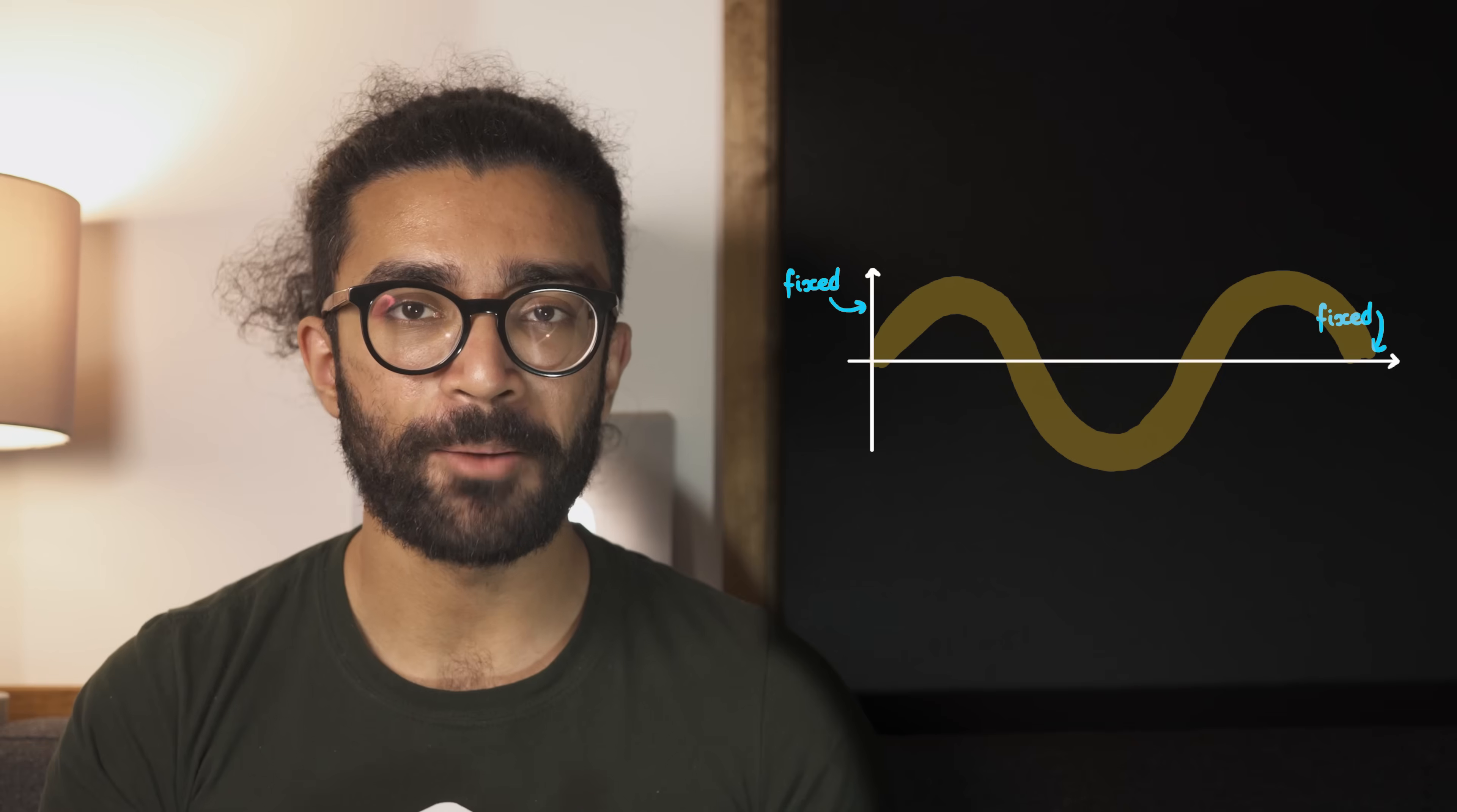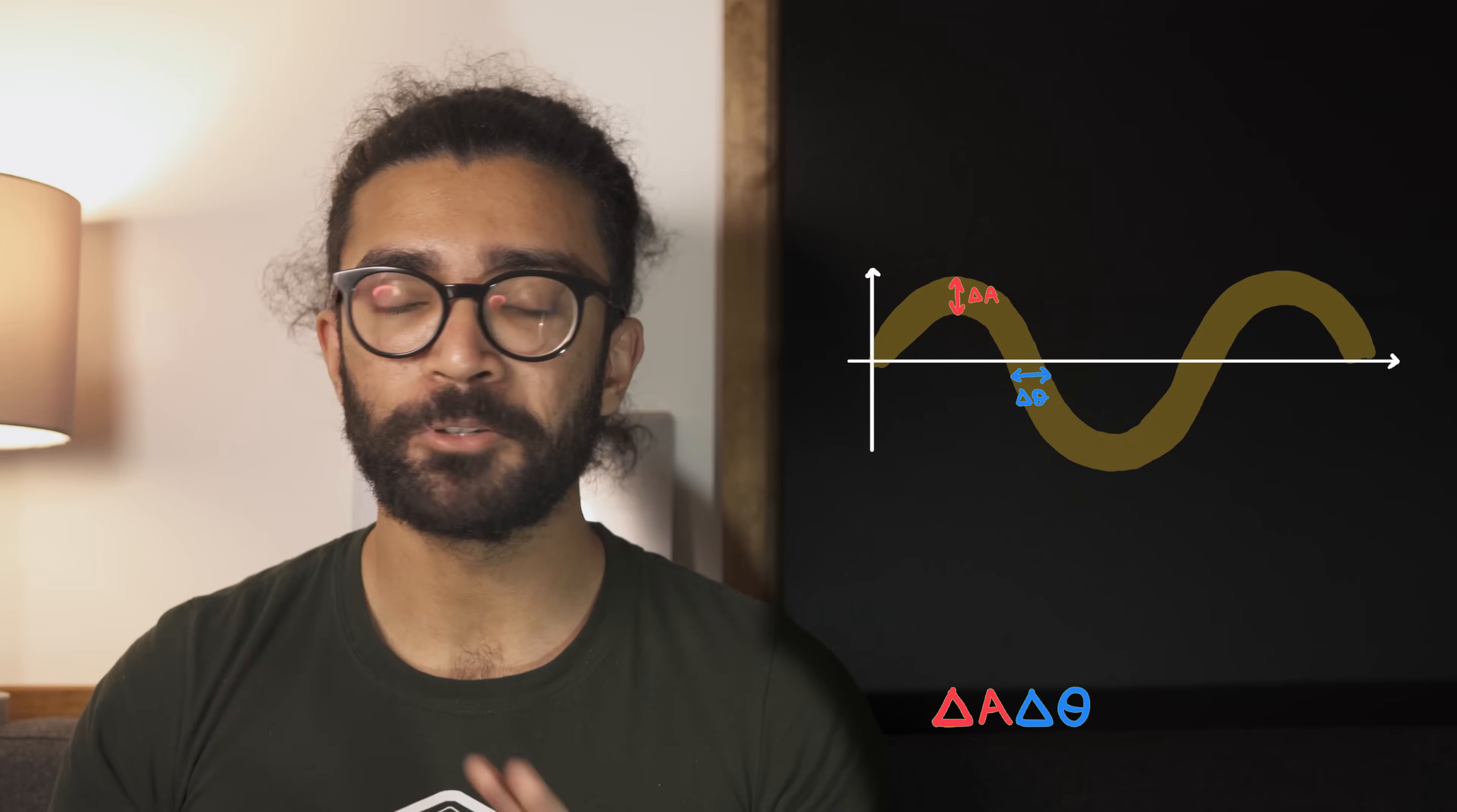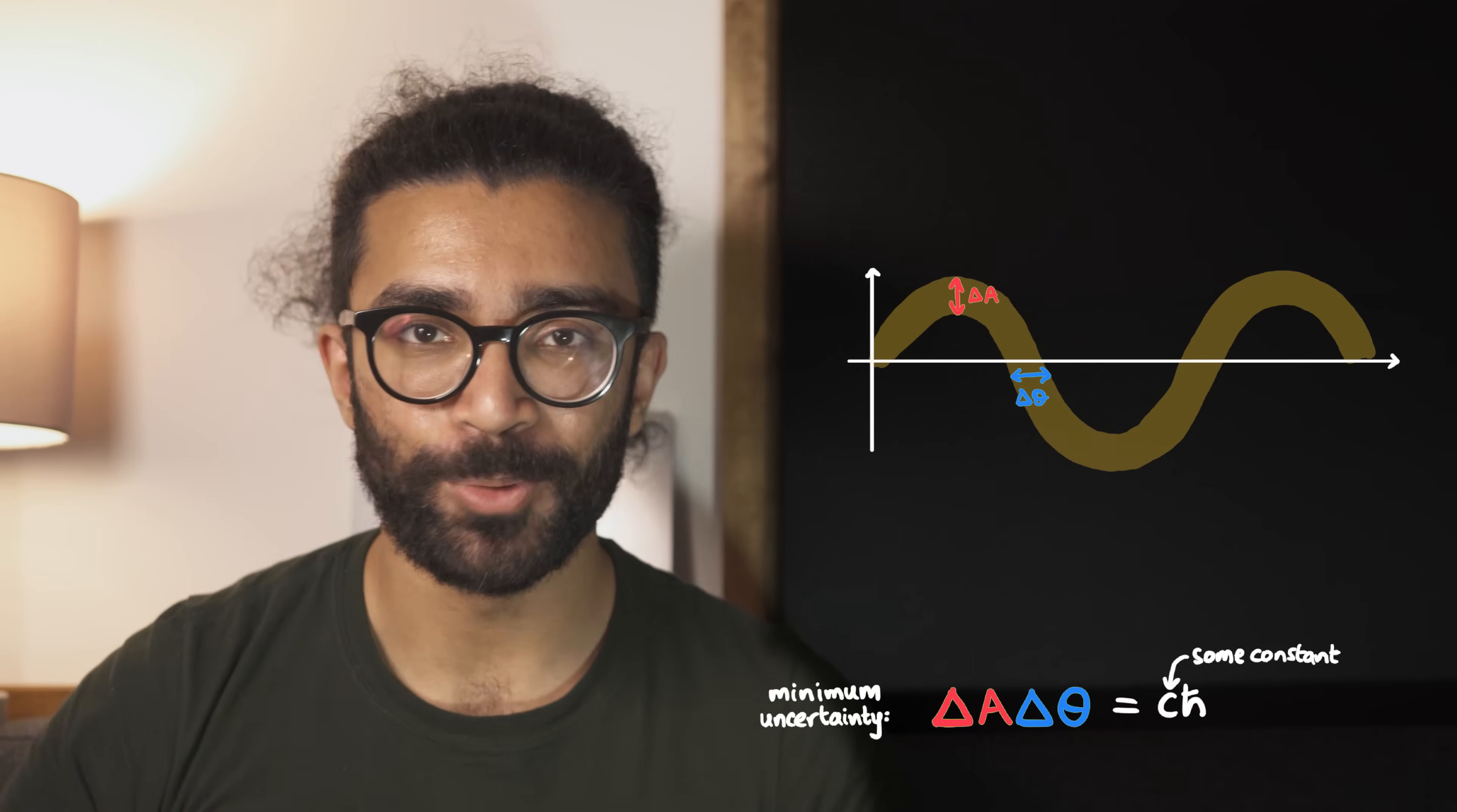With this quantum state, the uncertainties happen to be the same in both if we work in natural units. The units are not particularly relevant here. But remember, the amplitude and phase are obeying an uncertainty relation, so the product of these two uncertainties has to be greater than or equal to this number here. In this particular case, we're looking at the minimum possible uncertainty, meaning the product of these two quantities is the lowest possible value it is allowed to be. But here's something cool we can do.